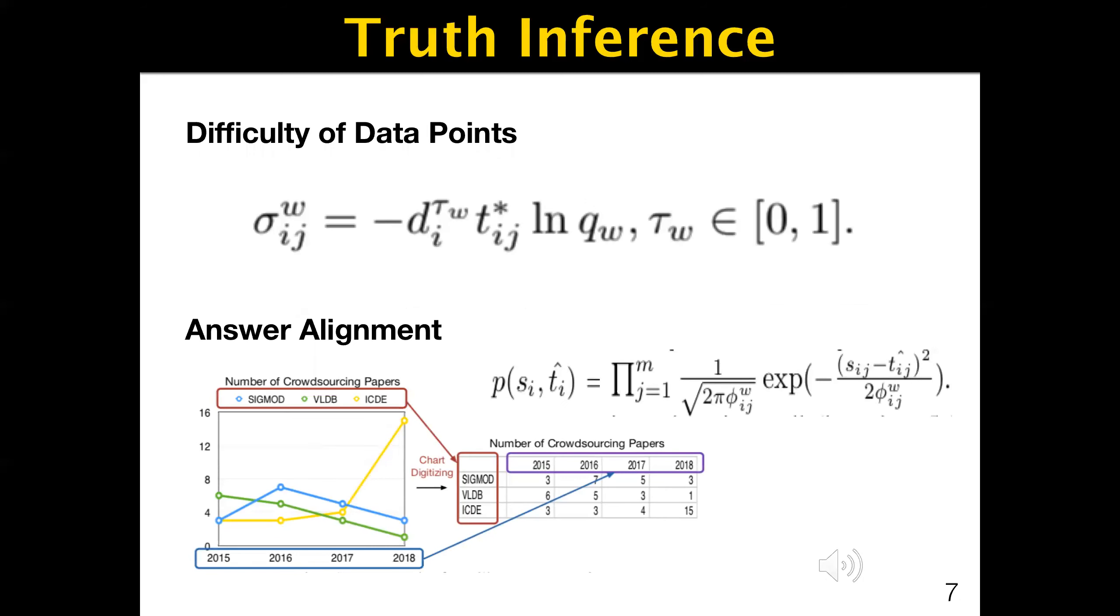We also incorporate the difficulty of data into the quality control. Here d is computed through the chart type, y-axis, and legend numbers. Please refer to the paper for detail.